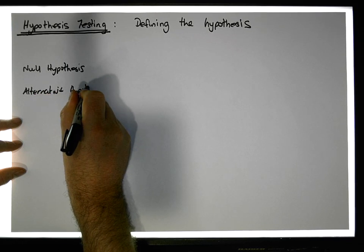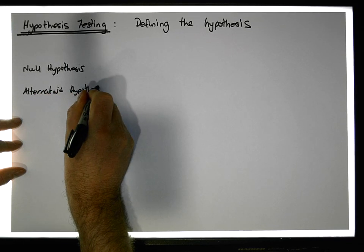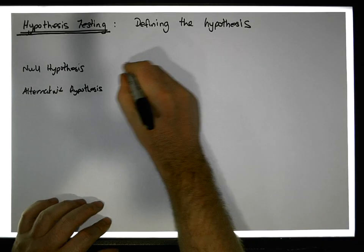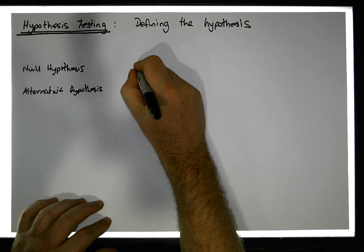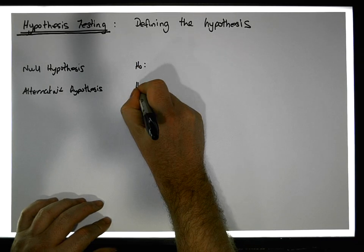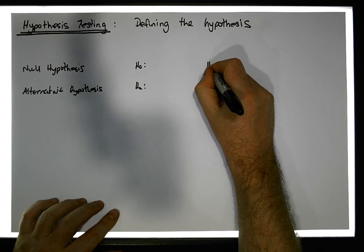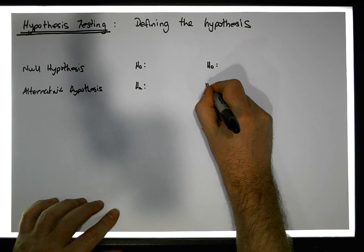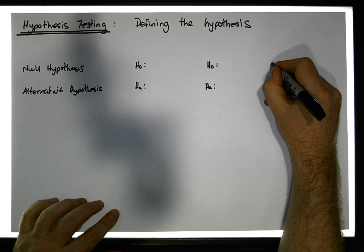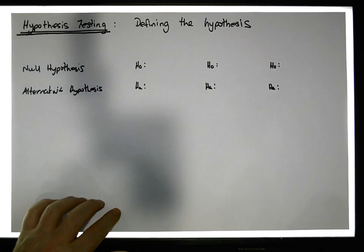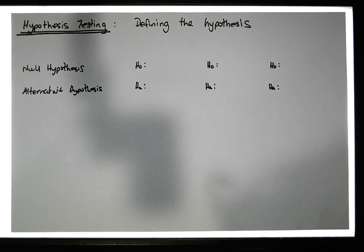There are three types of tests that can be done. I'm going to label these as H0 and HA for the first test, H0 and HA for the second test, and then a third variant with H0 and HA listed here.